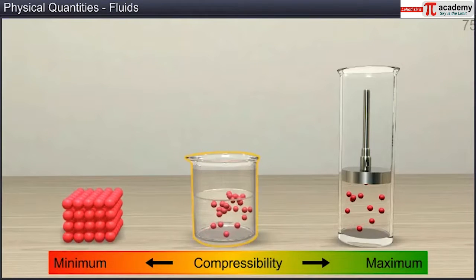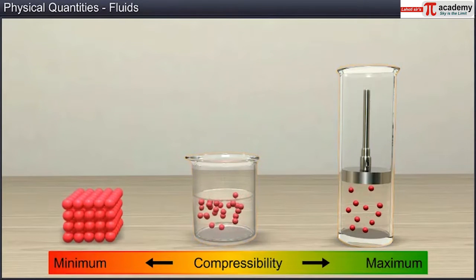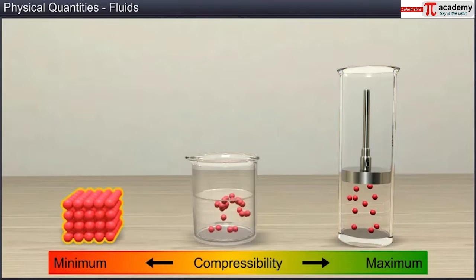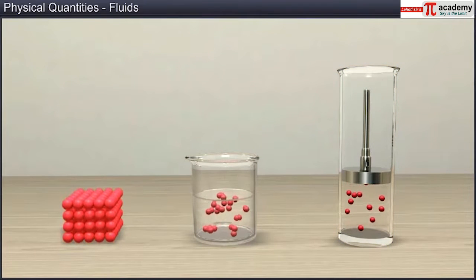Liquids are 10 to the power 5 times less compressible than gases but are about 10 times more compressible than solids. This is because the molecules in a liquid are not as closely packed as in a solid but are closer to each other as compared to a gas.